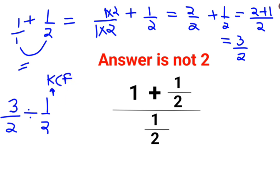Where K stands for keeping the first fraction as it is, C stands for changing the division sign to multiplication, F stands for flipping or taking reciprocal of 1 upon 2, which is 2.